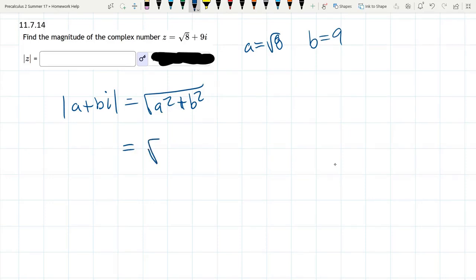If one of those is negative, I wouldn't even write that down because you're about to square. So if it was negative square root 8, that negative would get squared away plus 9 squared. Same thing if that 9 was negative—when you square it, it turns positive.